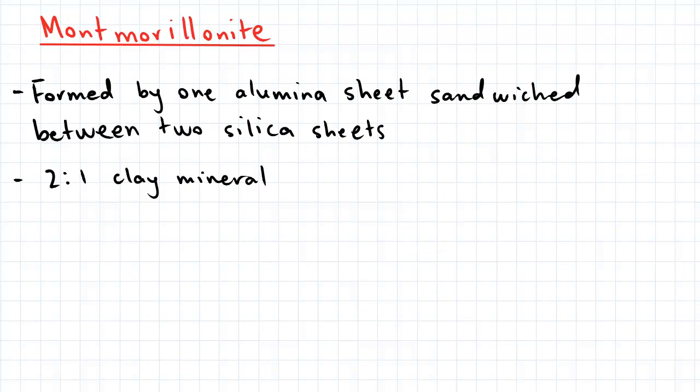The next mineral is montmorillonite, which is formed by one alumina sheet being sandwiched between two silica sheets. This is known as a two-to-one clay mineral.